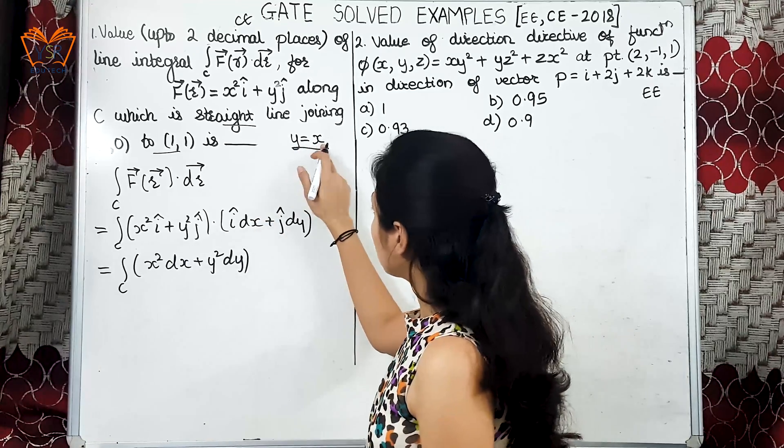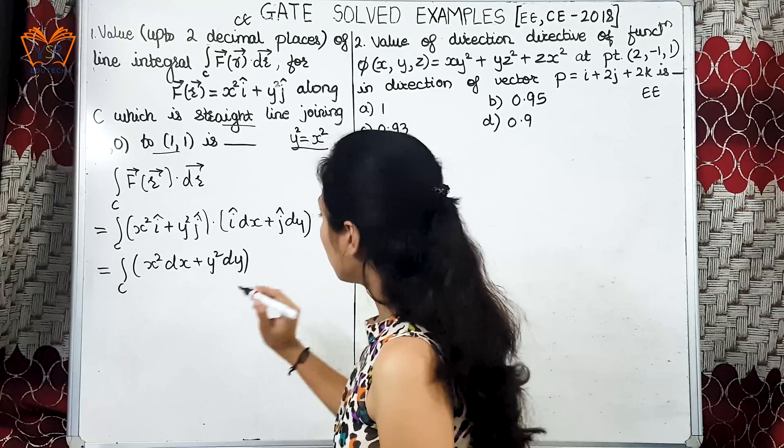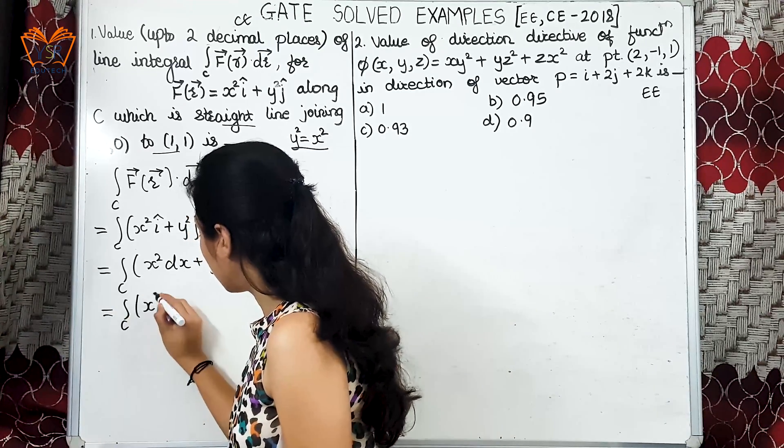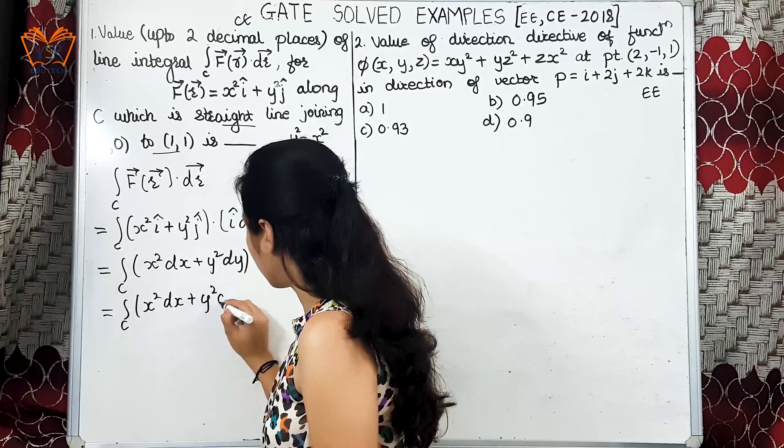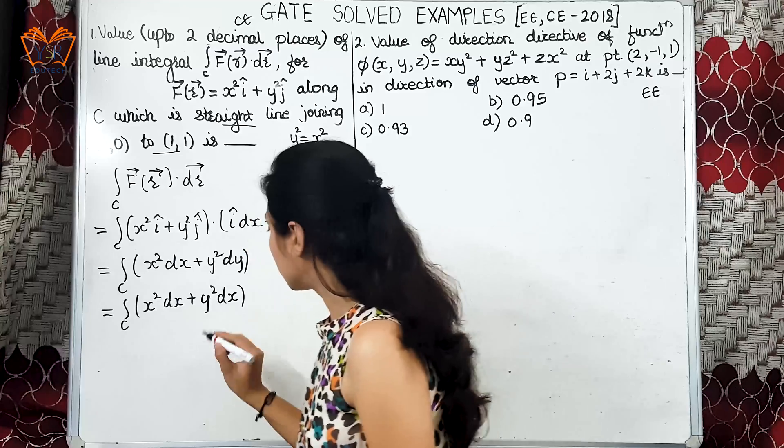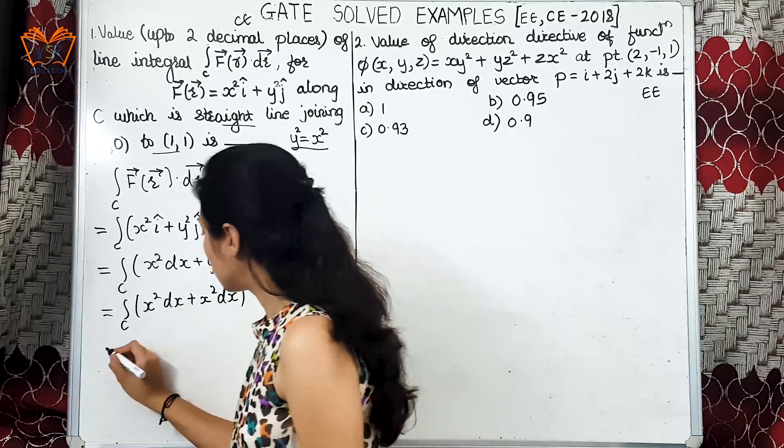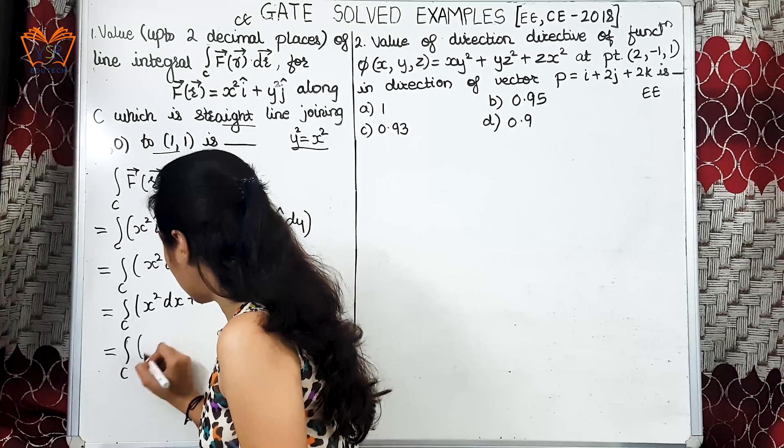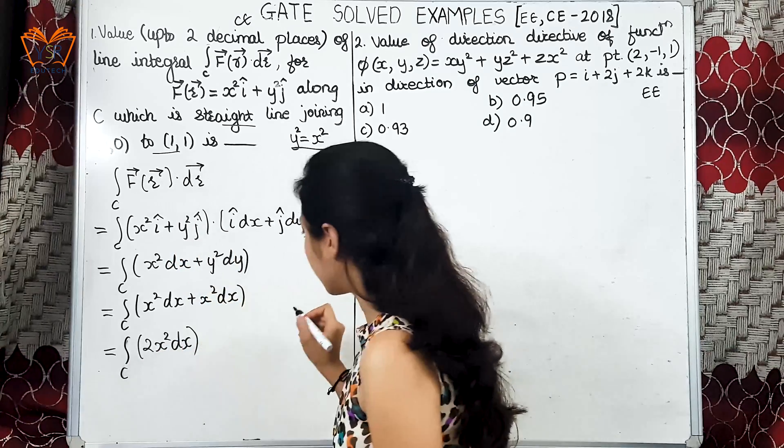Now let us use this equation here: y square equal to x square. Let us substitute that. We get x square dx plus y square - we get dx, sorry, x square dx. This will be 2 x square dx.